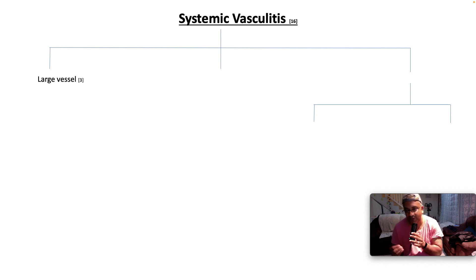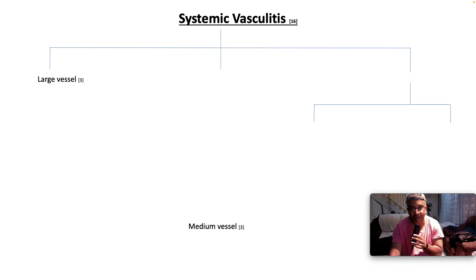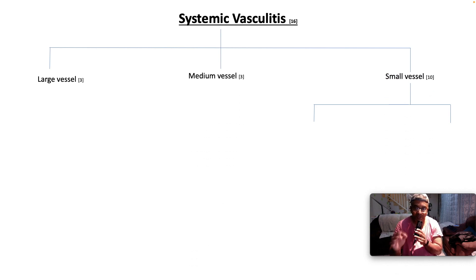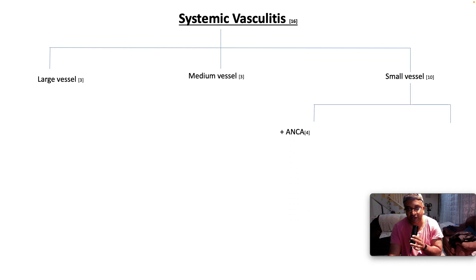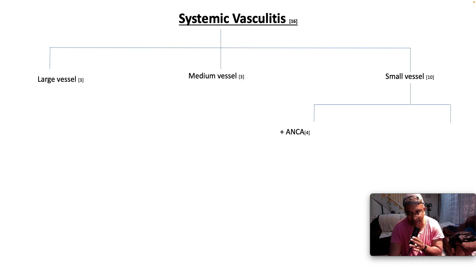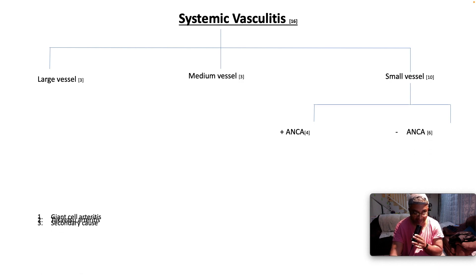The Chapel Hill classification of 2012 sub-classifies vasculitis into large vessel, medium vessel, and small vessel — on the basis of the size of vessels involved. Small vessel is further divided into ANCA-positive, which is anti-neutrophil cytoplasmic antibody — C-ANCA and P-ANCA — or ANCA-negative.